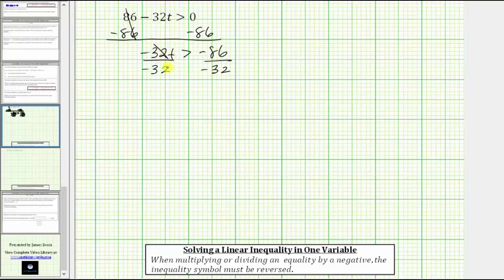Negative 32 divided by negative 32 is one. One times t is t. We have t is less than, again we reverse the inequality symbol. And on the right, a negative divided by a negative is positive. We have positive 86 divided by positive 32. While we could give the exact value of t by simplifying this fraction, we're asked to round to two decimal places. So let's find this quotient on the side.